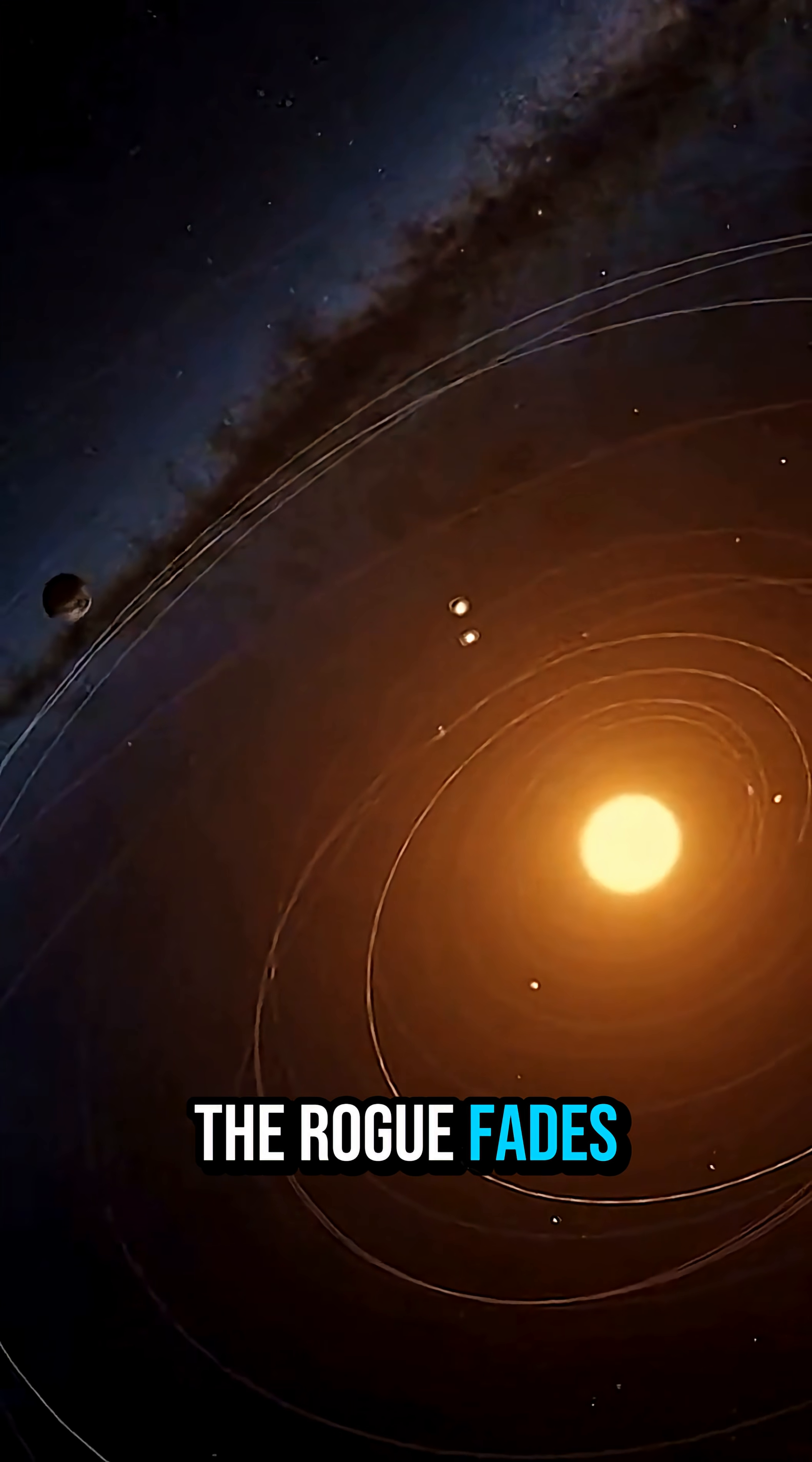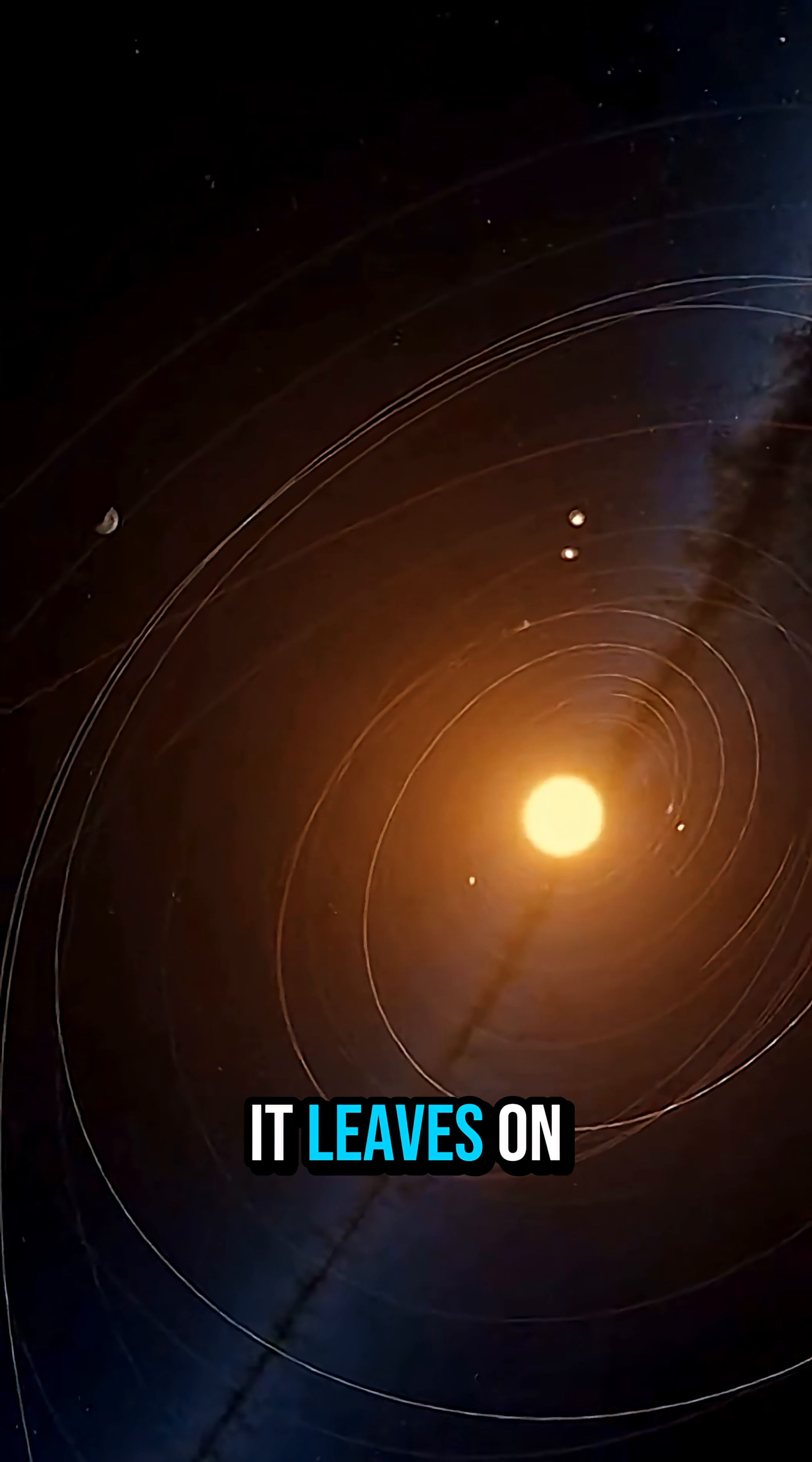The rogue fades back into the dark, but the scars it leaves on our solar system never really go away, written into every changed orbit.